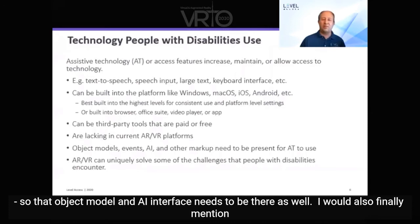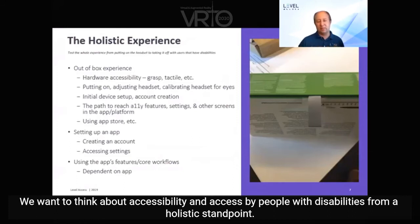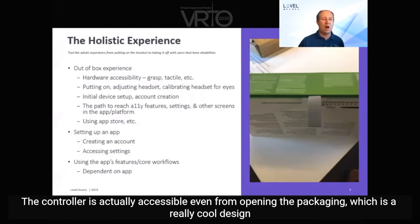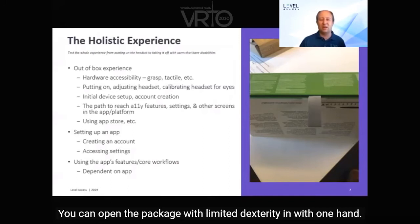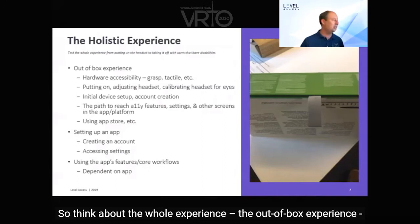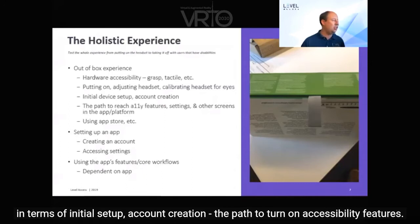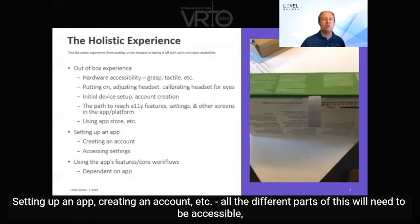AR and VR can uniquely solve some of the challenges that people with disabilities have. We want to think about accessibility from a holistic standpoint. The Xbox Adaptive Controller, for example, is accessible even from opening the packaging — a design that AbleGamers and Microsoft worked on together — so you can open the package with limited dexterity and one hand. Think about the whole out-of-box experience: hardware accessibility, adjusting a headset, calibrating your experience, initial setup, account creation, and the path to turn on accessibility features. It's great if you have accessibility features, but if you can't easily turn them on, then they're not effective.